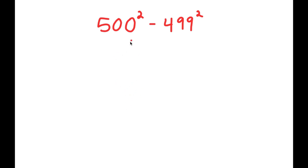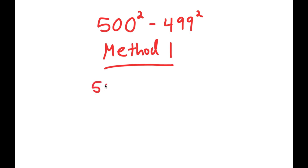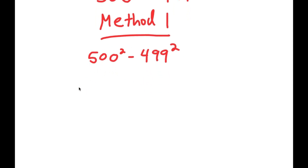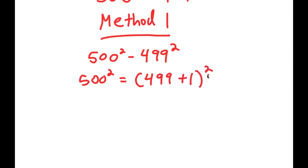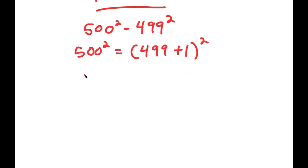In this problem I have 500 squared minus 499 squared, and I have two methods to solve it. For method one, I start by rewriting 500 squared. So 500 squared is the same thing as 499 plus 1, squared.